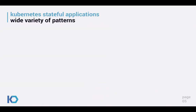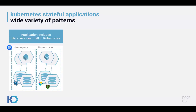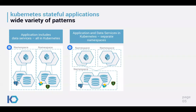Let's look at what kind of applications we're seeing in Kubernetes. The first pattern is where applications and the data services they use are all bundled together — deployed in Kubernetes in the same namespace. Data services could be a Postgres database, a NoSQL database, or simply a block volume with a persistent volume in Kubernetes. Each application has its own data services deployed in its own namespace.